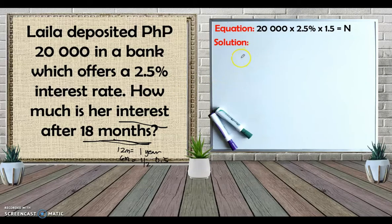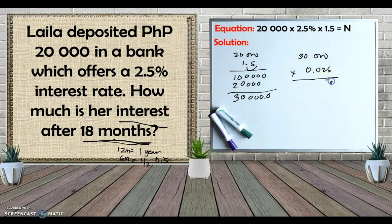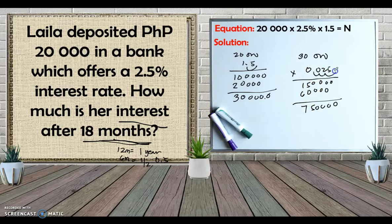So we multiply 20,000 times 1.5 to get 30,000, then multiply 30,000 by 0.025 (the decimal equivalent of 2.5%). Counting the decimal places, her interest after 18 months is 750 pesos.